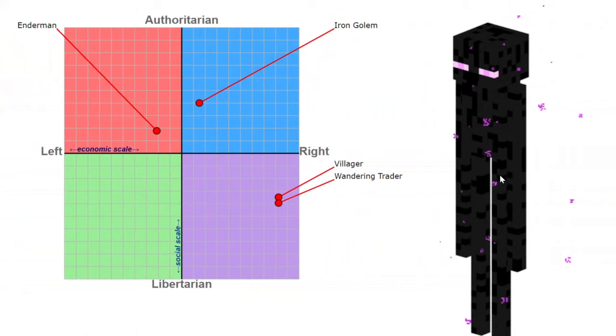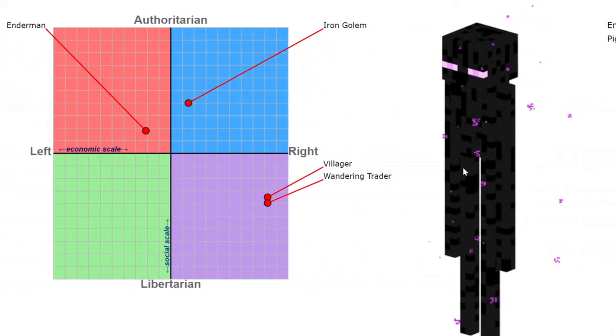Overall, the Enderman is a centrist. This is due to them being more interested in teleporting than anything else.